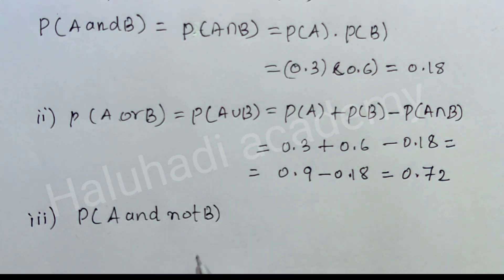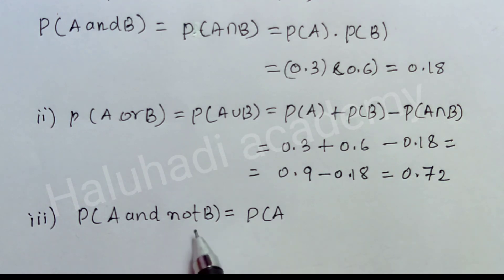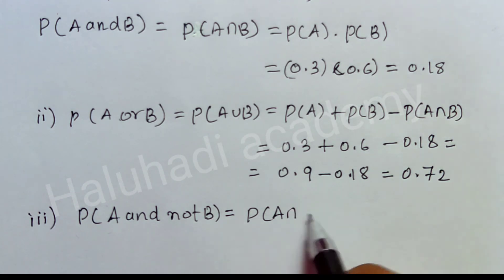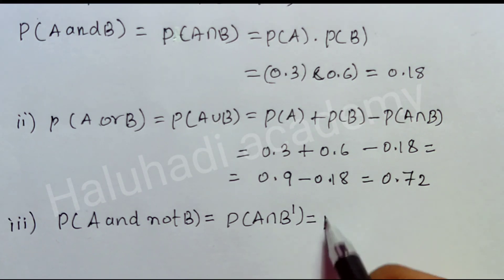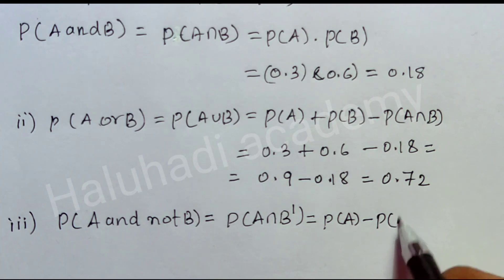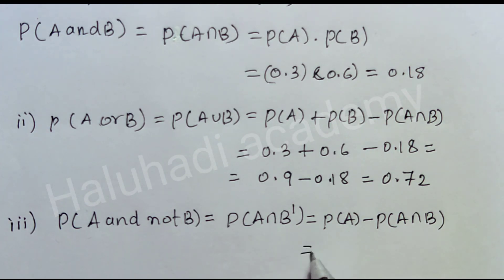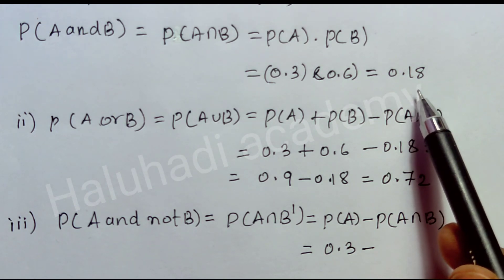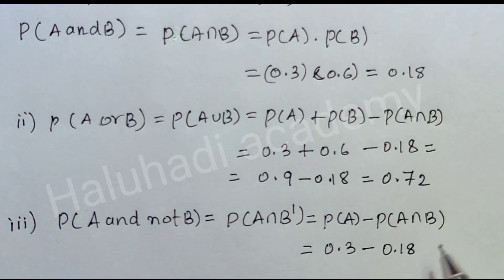The third one: P of A and NOT B. This is P of A intersection B dash — B dash means NOT B. The formula is: P of A intersection B dash equals P of A minus P of A intersection B. Substituting: 0.3 minus 0.18 equals 0.12.